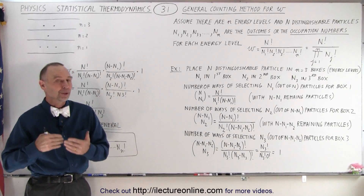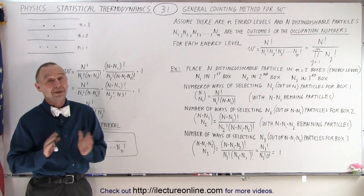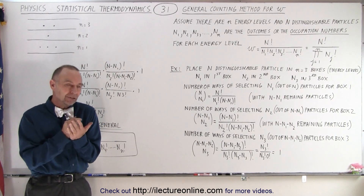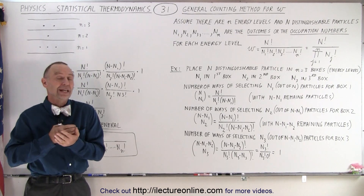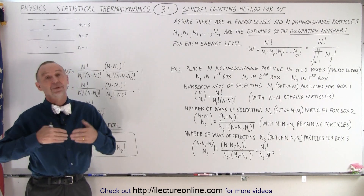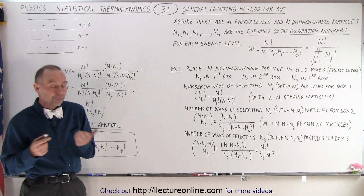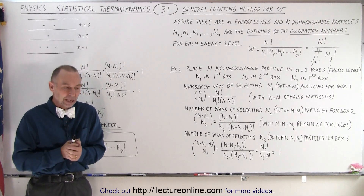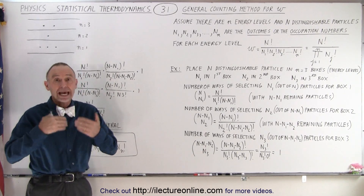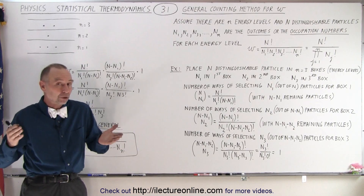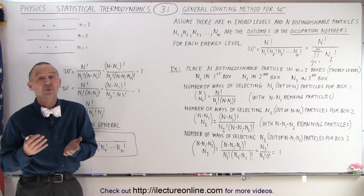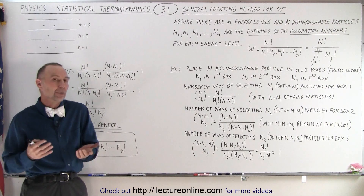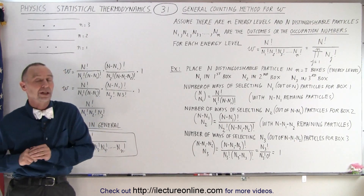A presentation of statistical thermodynamics would not be complete unless we were able to show how to calculate the total number of microstates in a particular situation. For example, if we have n number of boxes or n number of energy levels, and we have large N number of molecules, what are all the various ways in which those molecules could be distributed among the various boxes or among the various energy levels?